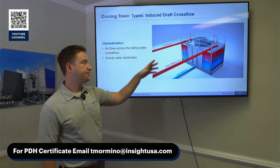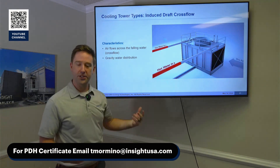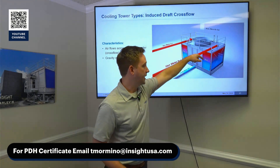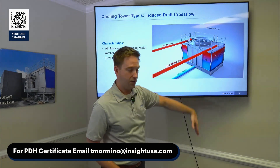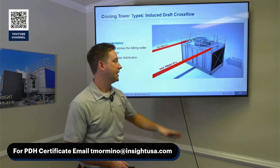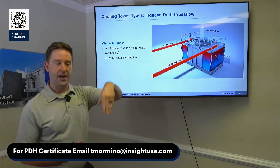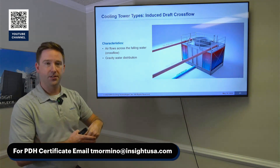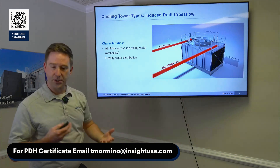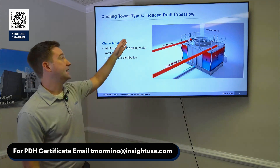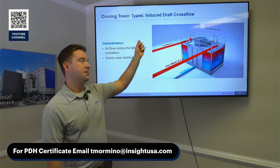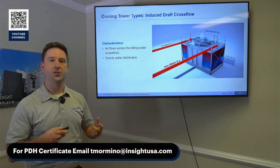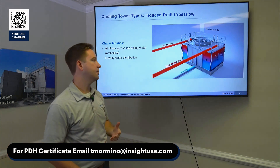This is a cross-flow tower. Water comes into the tower and goes down over the fill or heat transfer media, and air comes in from the side. The air-to-water interaction — they cross each other — that's how you know it's a cross-flow tower. It's also an induced draft, meaning there's a fan at the top pulling air through, inducing air through the tower. So it's an induced draft cross-flow tower.